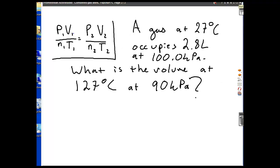So, in this problem here, we talk about 27 degrees Celsius. What's that represent? T1. That's my first temperature. Now, what do we have to convert that to? Kelvin. 300 Kelvin. It occupies 2.8 liters. What does that give you right there? My volume, my first volume. At 100 kPa. What's that? What's kPa measured? Pressure. That's my P1.